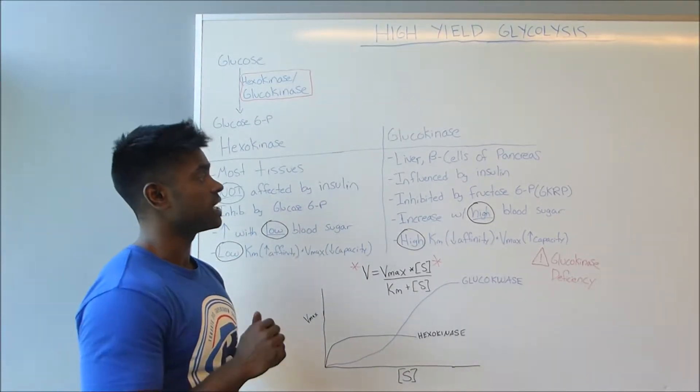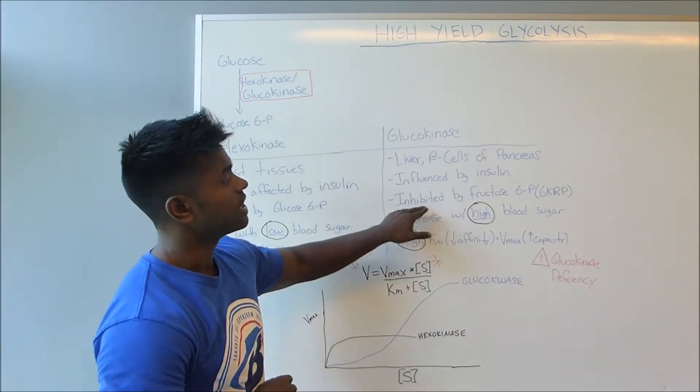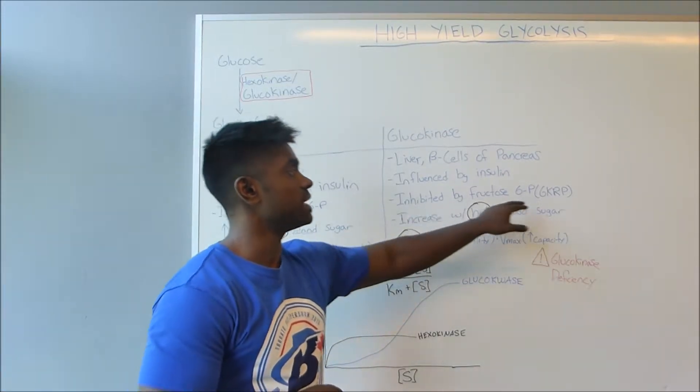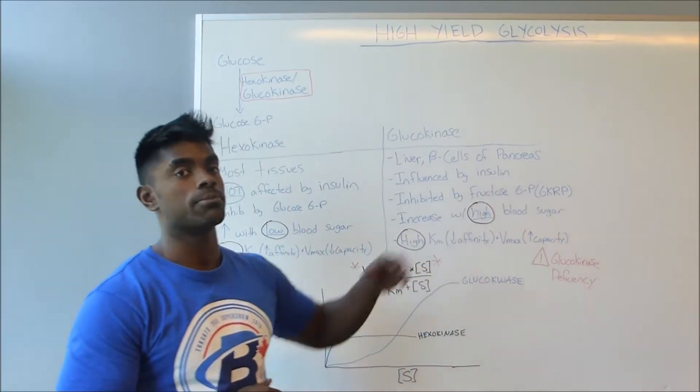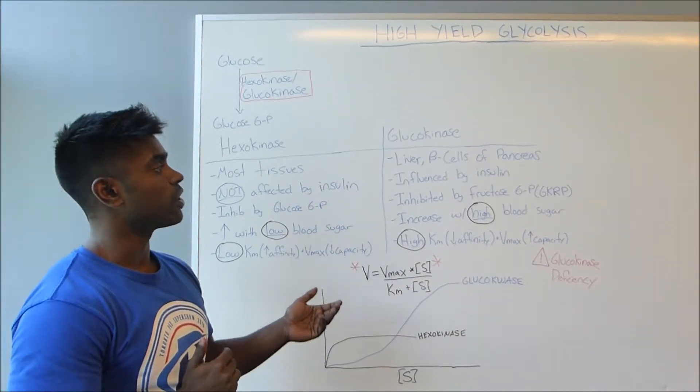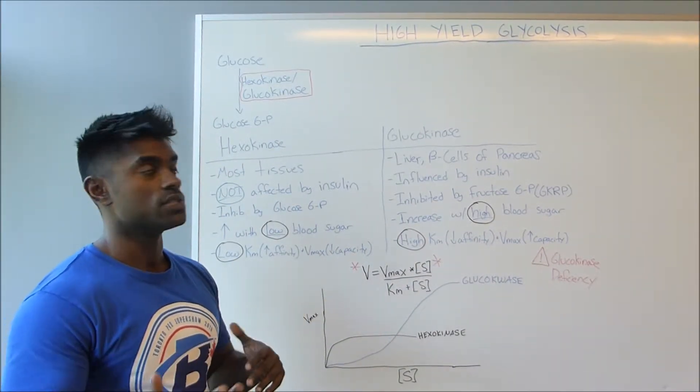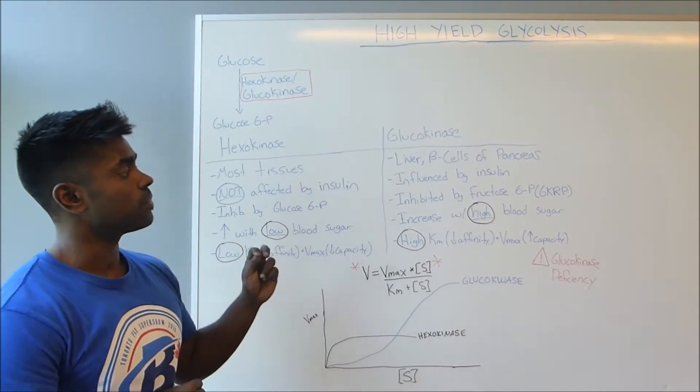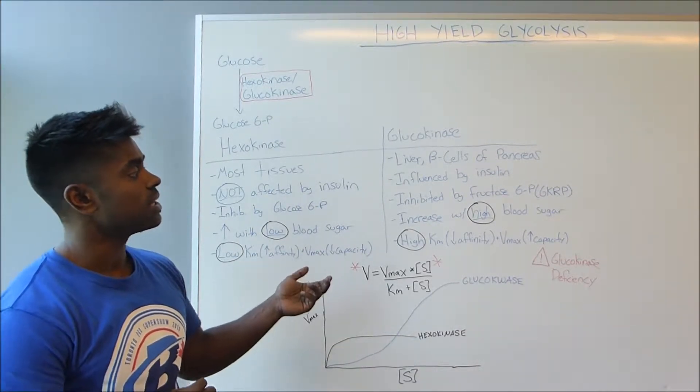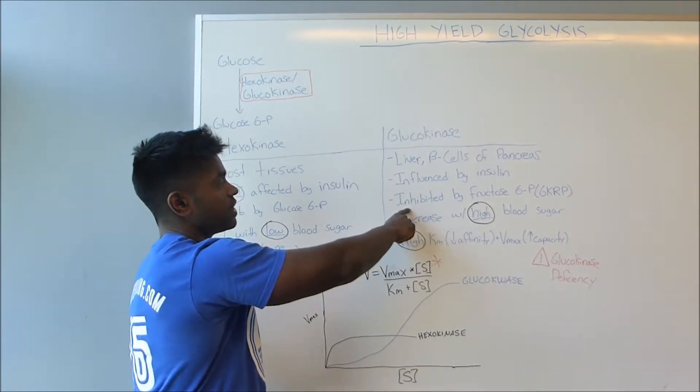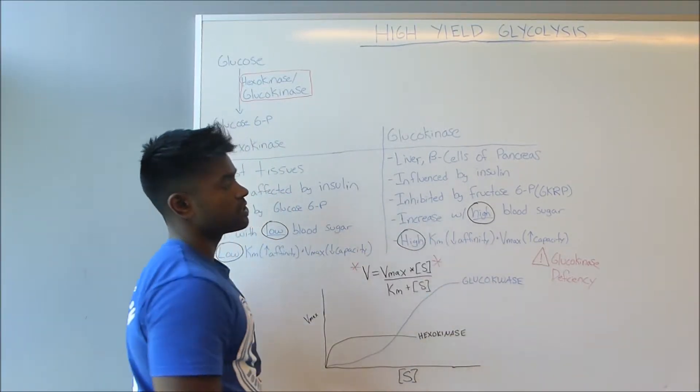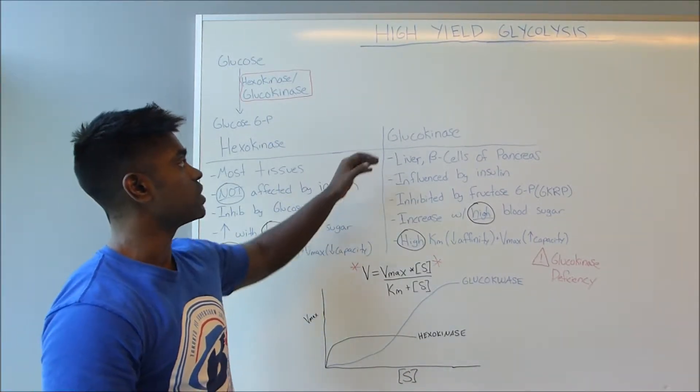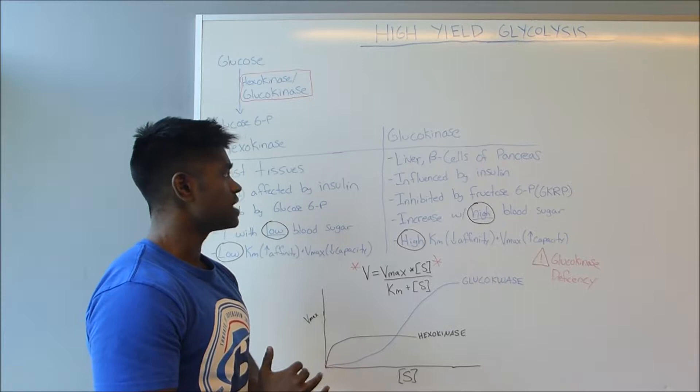And what's also interesting is that this inhibition is overcome by glucose, because glucose will actually displace glucokinase regulatory protein. Therefore, you're not going to be having that translocation into the nucleus. And this makes sense because you're going to have an increased activity with high blood sugar. Because there's going to be high levels of glucose inside the body, then this is going to increase as well.